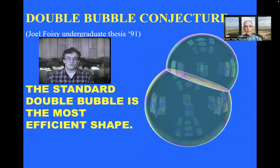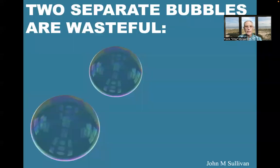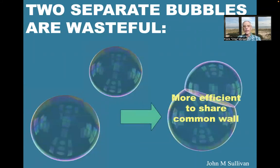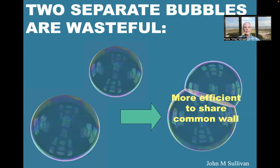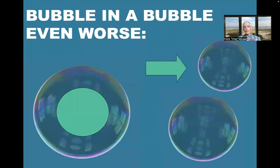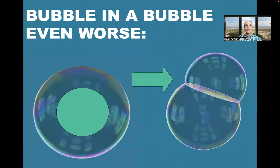Well, this is a beautiful shape. What else? What could beat it? Two separate bubbles are wasteful, right? Because when they come together, they can share that common wall. That's more efficient. High school students often suggest another idea. How about a bubble inside a bubble? But that's even worse, because if the little bubble comes out, the outside bubble gets smaller. And then when they come together, it does still better.